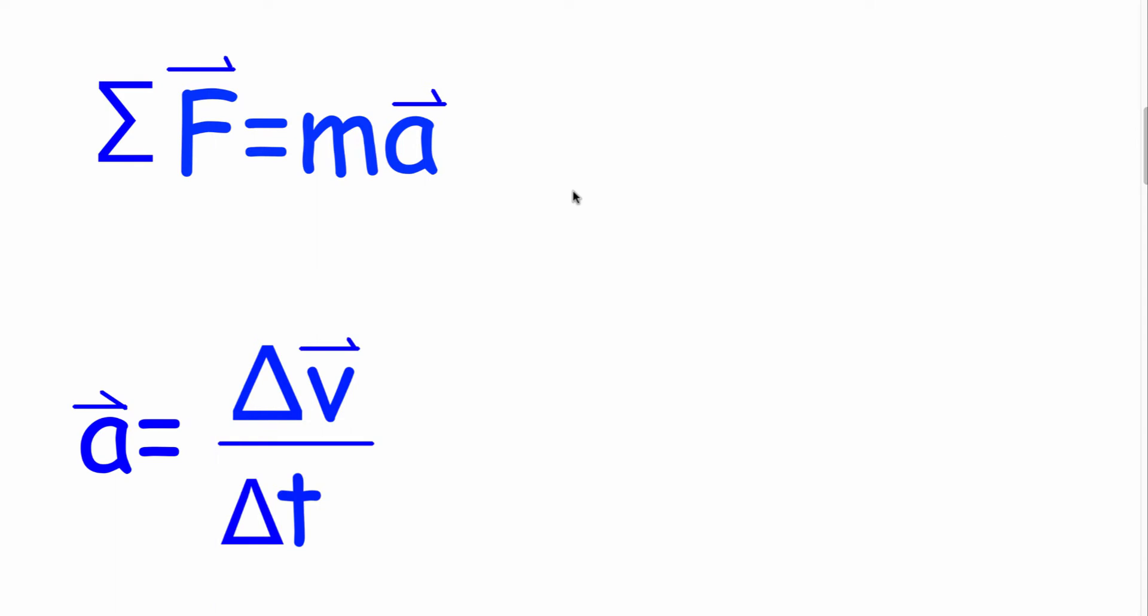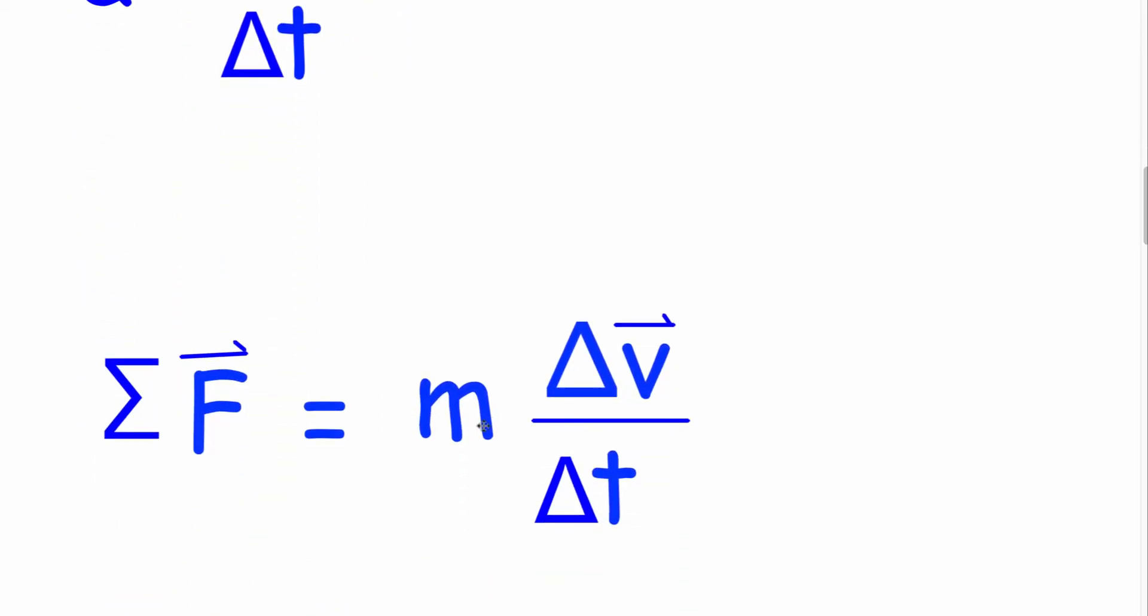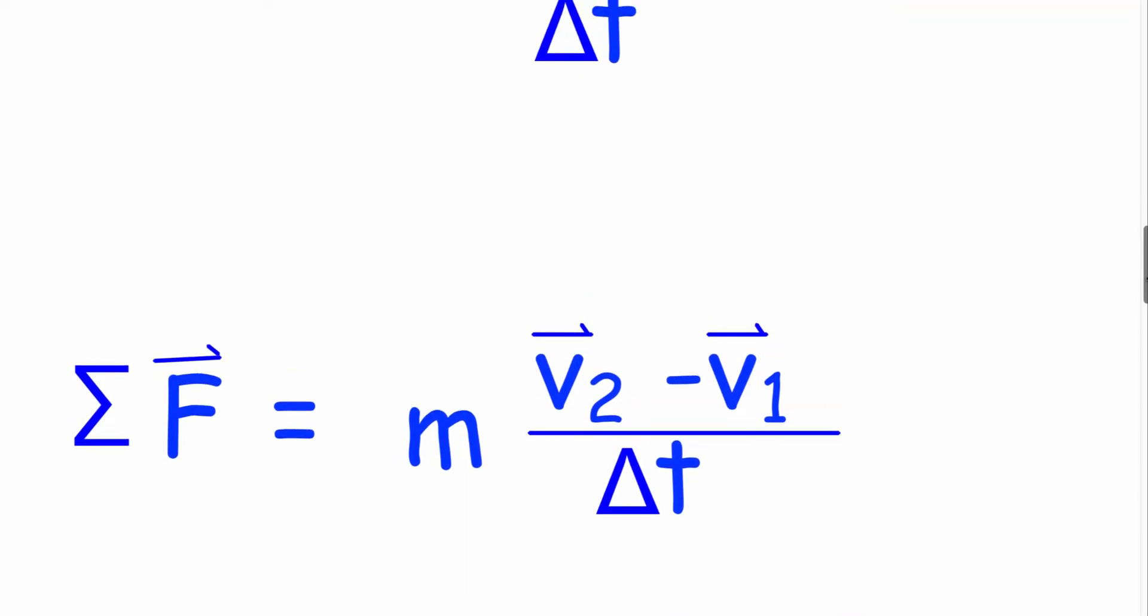So we're going to combine these two ideas together. Instead of having the a in Newton's law, we're going to put in this kinematic relation, which gives us sum of all forces equals mass times change in velocity over change in time, or we can write the change in velocity as v2 minus v1 over delta t.